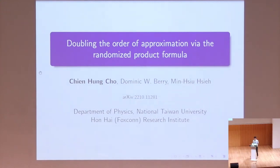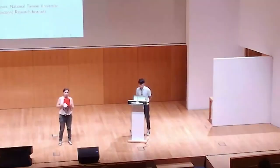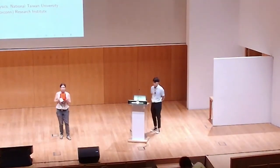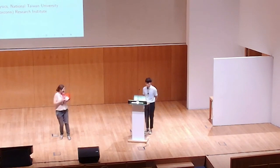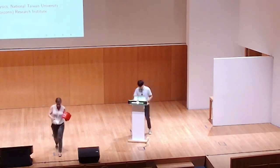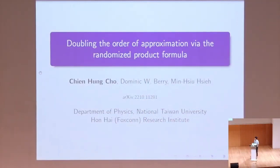Welcome, everyone. Our last talk of this morning's session will be Chen Hongchou, who will be talking about simulating Hamiltonians using the randomized product formula. Thanks for the introduction. Hello, everyone. My name is Chen Hongchou, and I'm from the Department of Physics at National Taiwan University, and also currently an intern at Honghai Quantum Research Institute. Today it's my pleasure to present my recent work: doubling the order of approximation via randomized product formula.